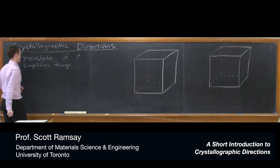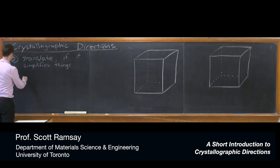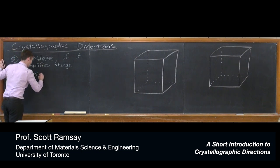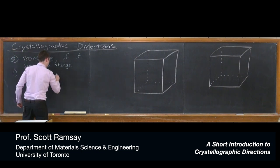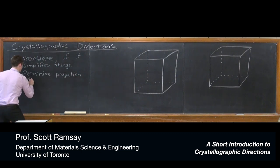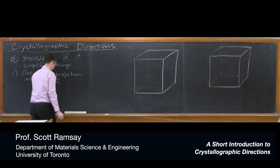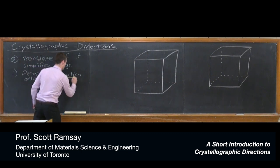So then once you've got that translated vector, translated means it's shifted in space parallel to the original, then you determine projection onto the axes. We'll start with cubic x, y, and z. That's projection.